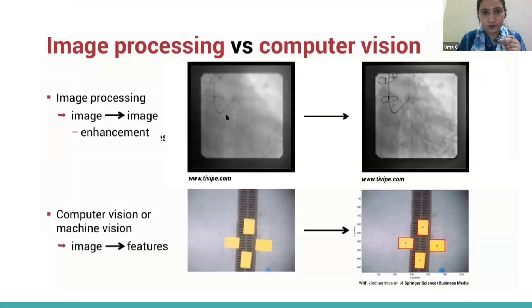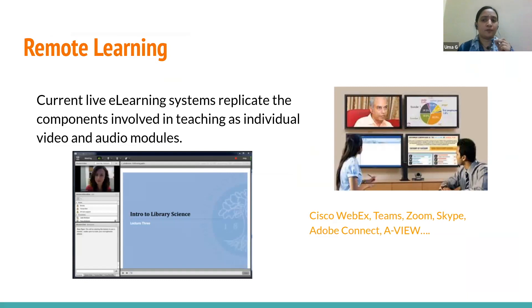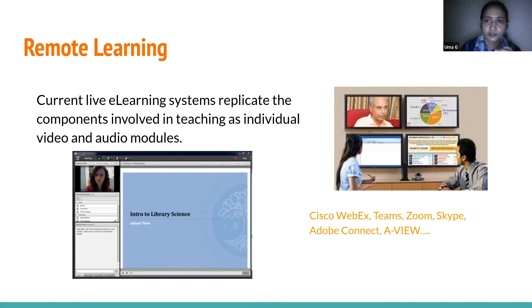Here is an example: with image processing, you take an input image and get an enhanced version. With computer vision, you derive information from it — for instance, identifying that four yellow objects are present. In my PhD work, I focused on remote learning, applying computer vision algorithms to enhance the remote student's experience of a class — especially relevant during the pandemic when classes moved online.